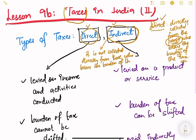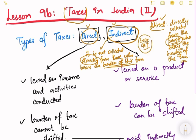In indirect taxes, tax money is not collected directly from whoever bears the burden, but it is collected from somebody else. For example, if you buy something and there is an excise duty or GST applied on it, ultimately the consumer pays this GST to the government - but it is not collected individually from every consumer. It is collected by the manufacturers or service providers, who then pay it to the government. The tax burden is on the individual consumers, but they don't pay directly - that's why such taxes are called indirect taxes.